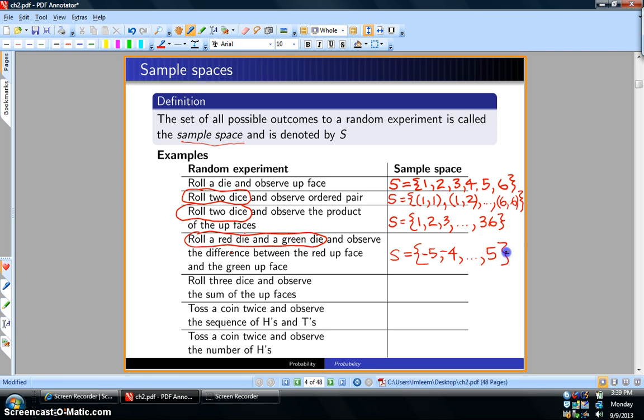The next example: roll three dice and observe the sum of the up faces. The sample space—the lowest you could get is three ones, which is three. Then you could get one, one, and two in any order, which is four. The highest you can get for the sum of three up faces is 18.